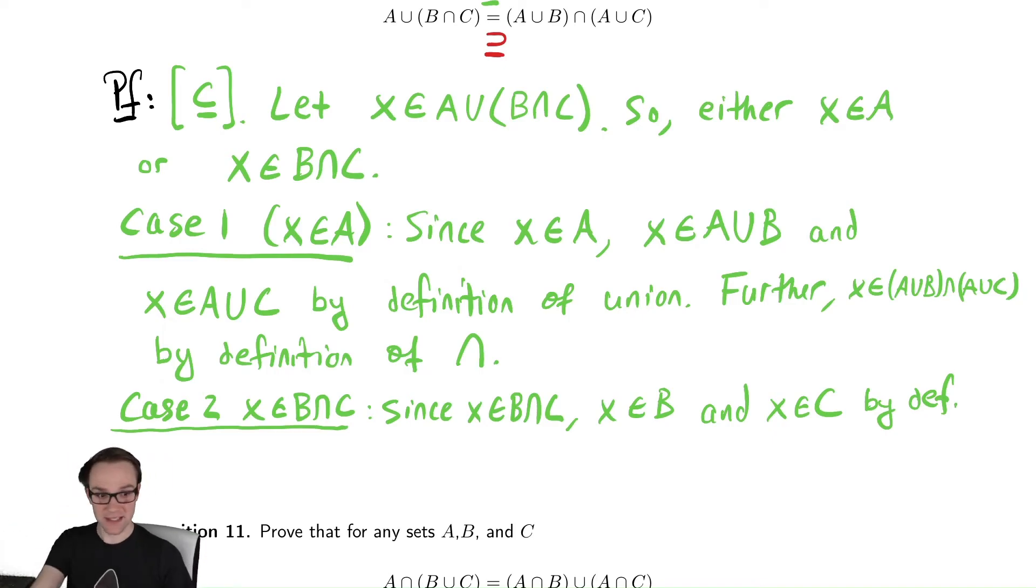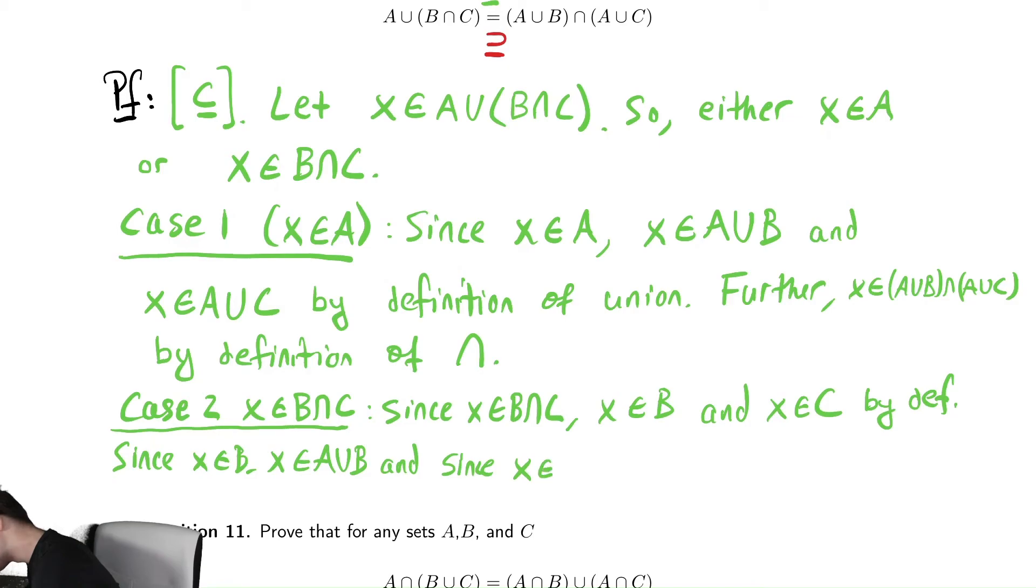If it's in B and it's in C, I now know that it would be in A union B, because it's in B. So, since x in B, x is in A union B. And since x is in C, it must be in A union C.